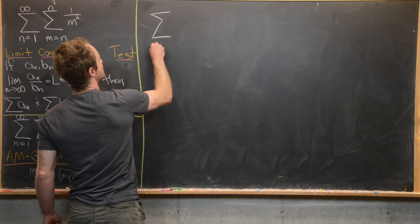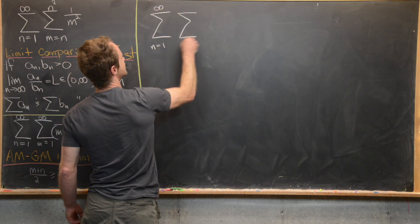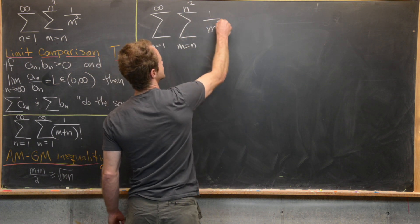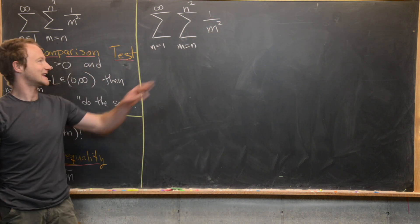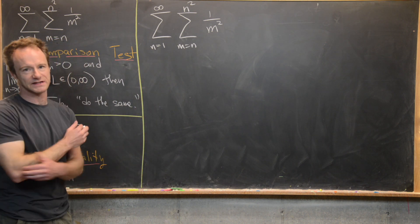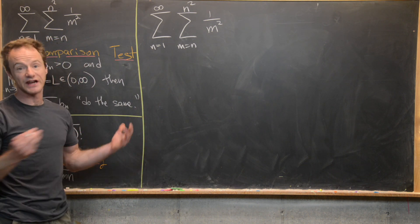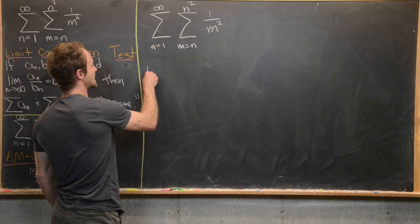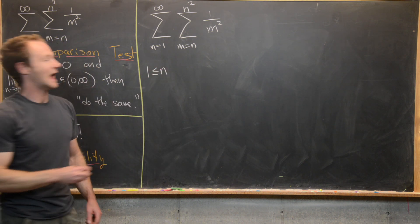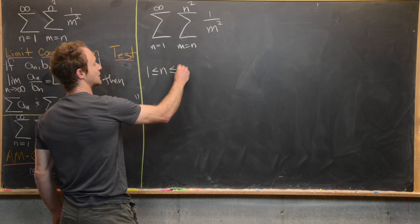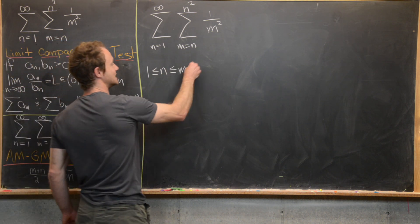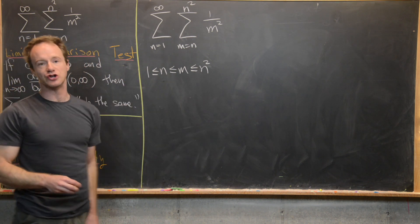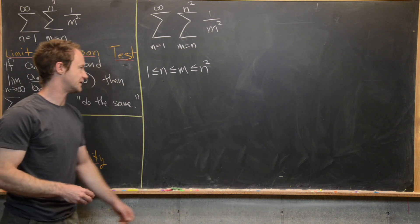We have the sum as n goes from one to infinity, and then the sum as m goes from n to n squared of one over m squared. Just looking at this, it's not super clear whether this should converge or diverge because we know by the p-series test, a similar looking single sum will converge. Now because this inner sum is a finite sum and thus obviously converges, we can change the order of summation. Notice here we have n is bigger than or equal to one, and then m is bigger than or equal to n, and then m is less than or equal to n squared. But there's no bound on n, and thus there's no bound on n squared, so this is zooming off to infinity.